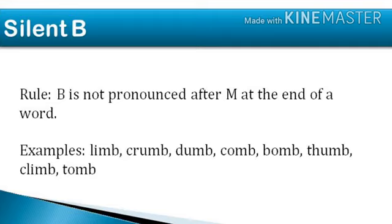The simple rule for silent B is its occurrence after M. Whenever B comes after M, we don't pronounce it. There are many examples like 'comb' and 'limb' — we just pronounce them without sounding the B.